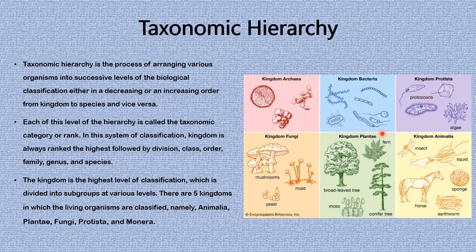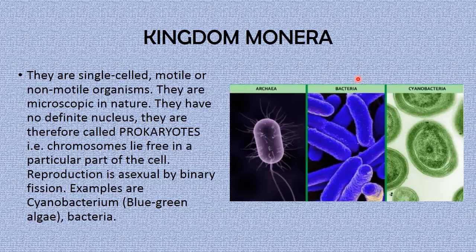So we have kingdom Protista, kingdom Fungi, kingdom Plantae — which consists of plants — and kingdom Animalia, which consists of animals, and kingdom Monera.